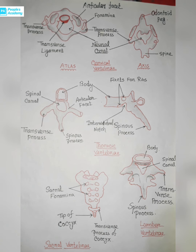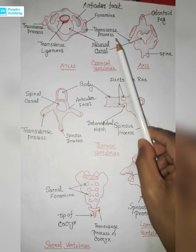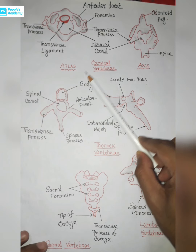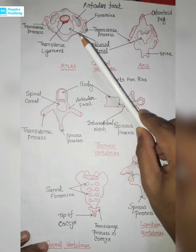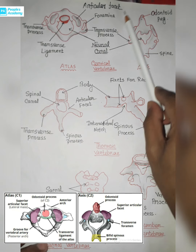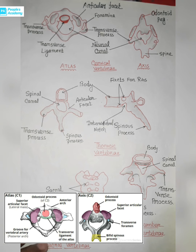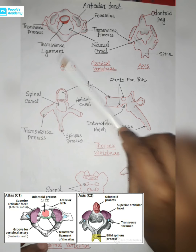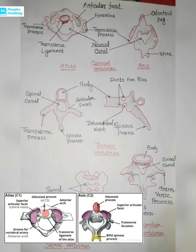Without wasting time, let's get started. Starting with the cervical vertebrae: the first cervical vertebra is called atlas and the second cervical vertebra is named axis. So the first cervical vertebra is atlas and the second cervical vertebra is axis.